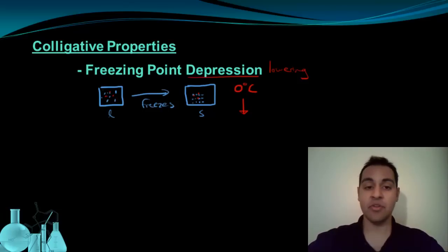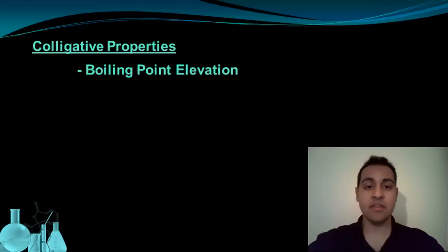The second colligative property we're going to look at is essentially the opposite of freezing point depression. It's called boiling point elevation. So where depression meant lowering, elevation means it's going to go up.